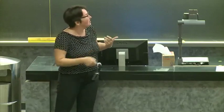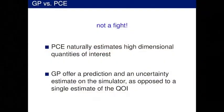In my perspective, these are the big reasons to choose one method over another for a given problem. In polynomial chaos, you get high-dimensional quantities of interest with uncertainty quantification naturally — you don't have to do anything extra for really high-dimensional output. For Gaussian processes, you have prediction uncertainty estimates of the simulator itself, of the computer model, as opposed to a single estimate of the quantity of interest. These are the sort of big flavors of why I might choose one over another.